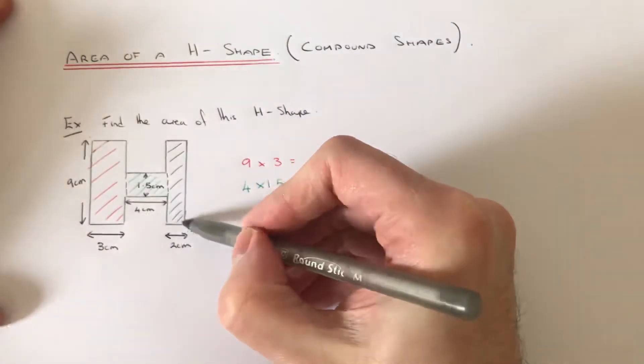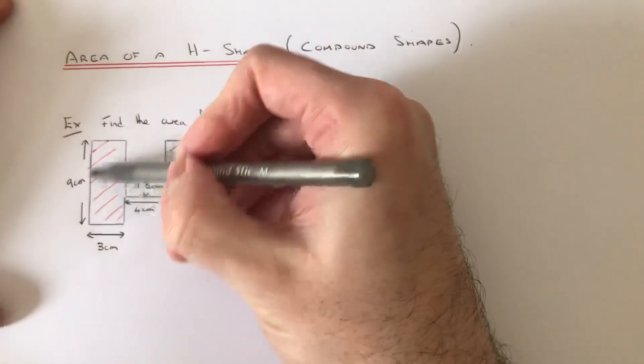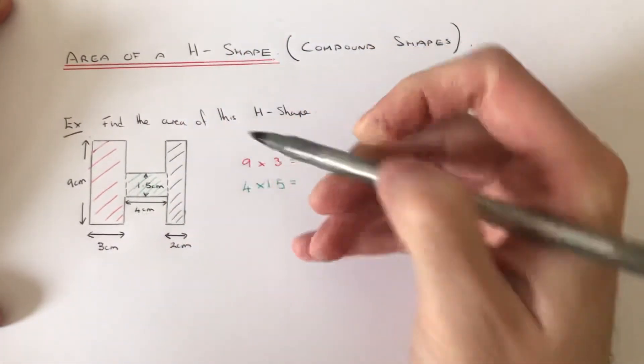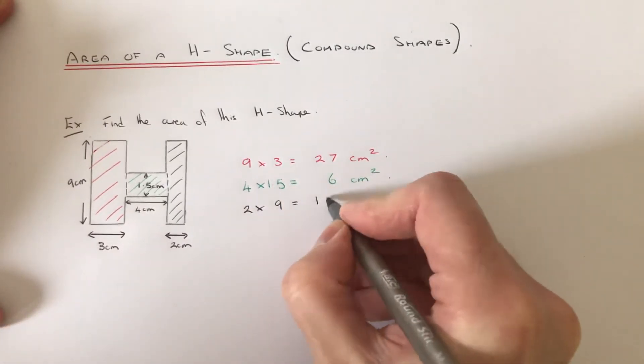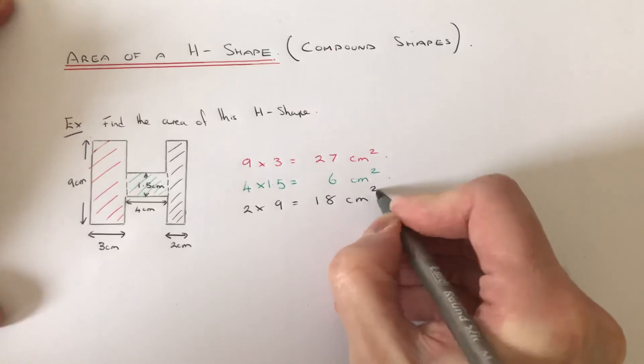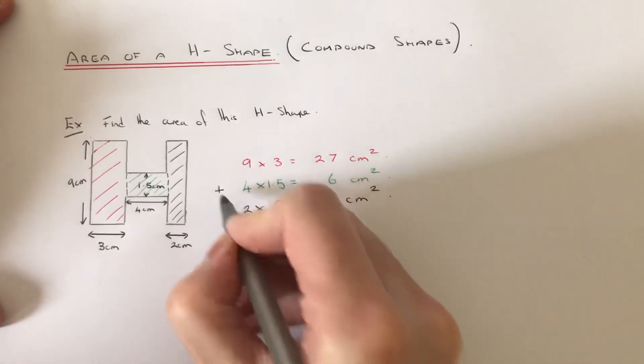And then the black rectangle. We've got the width here, which is 2. The length of it is the same as this one here, so that's a length of 9. So it's 2 times 9, which is 18. Now we just need to add these three areas up.